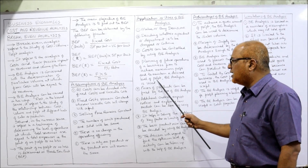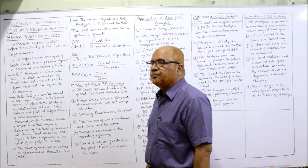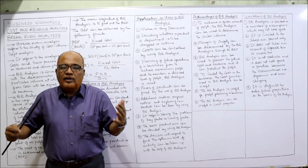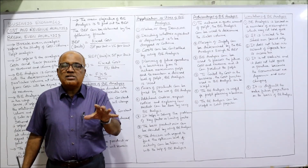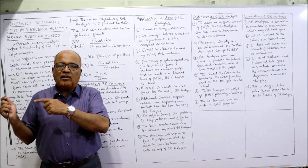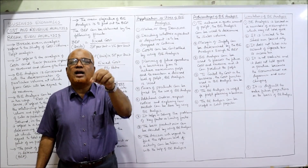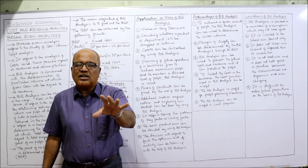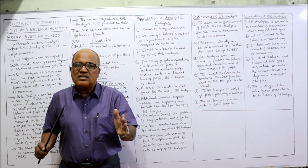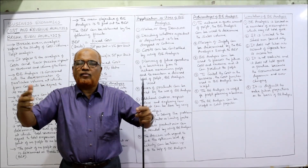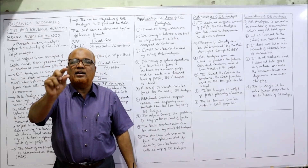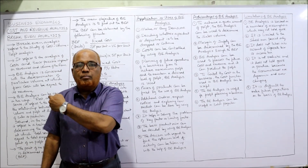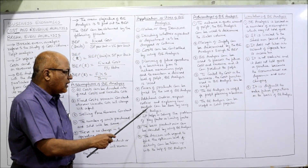Break-even analysis is used for planning future operations to achieve maximum profit and maintain a desired level of profit. Management's main function is planning — deciding in advance how many units should be produced and sold. Break-even analysis is very helpful to management for planning future operations. Another application is fixing the price of a product. If the price is fixed correctly, demand and sales will increase and profitability will improve; careless pricing prevents maximizing profit, so break-even analysis is a handy tool here.